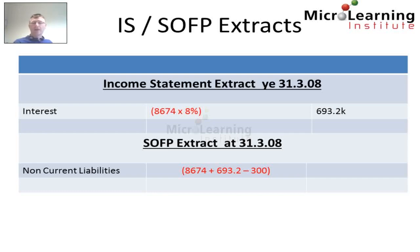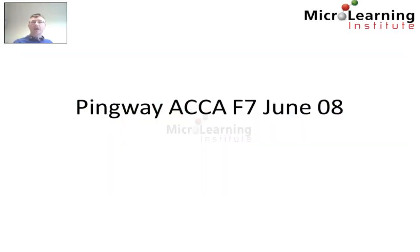Consequently the non-current liability recognized in respect of the loan is $9.067 million. Additionally we recognize the full amount of equity at $1.326 million on our statement of financial position. Thank you very much for looking at this short overview of the ACCA June 2008 question PingWay from the MicroLearning Institute.